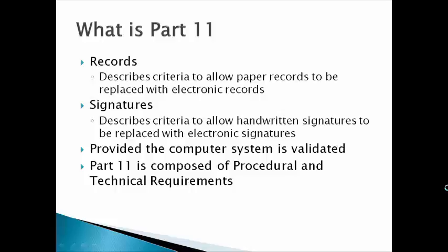Part 11 is composed of procedural and technical requirements, and we will discuss both. Many companies go to outside companies to purchase a Part 11 compliant program. They should keep in mind that these purchased programs can only satisfy the technical requirements — the computer system requirements. They cannot satisfy the procedural requirements; these must be implemented by the purchasing company. And we'll discuss what's involved with that.